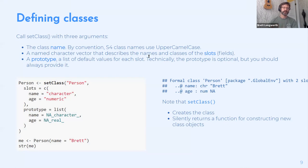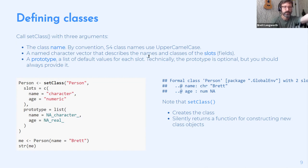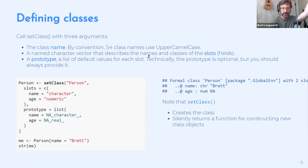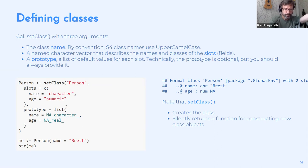`setClass` has three useful arguments: the name of the new class, the slots for data storage, and an optional prototype providing default values for each slot. The prototype is useful because when a class is instantiated it checks the data against the slots, using the prototype to populate slots you haven't provided a value for.